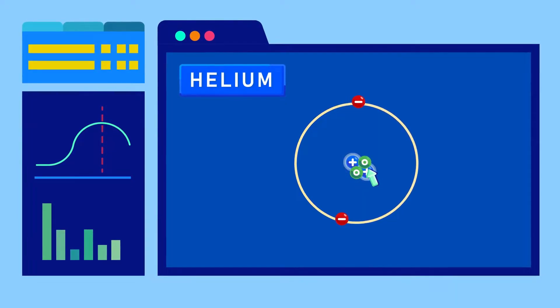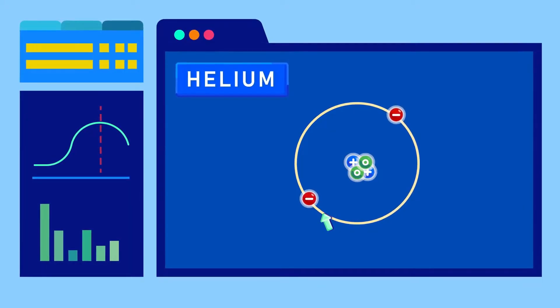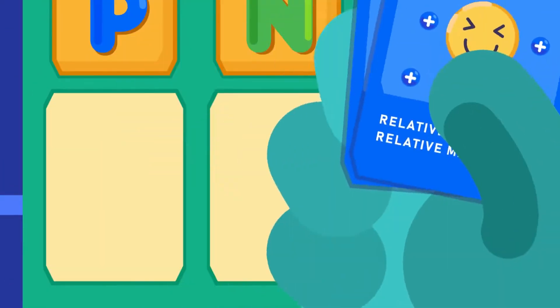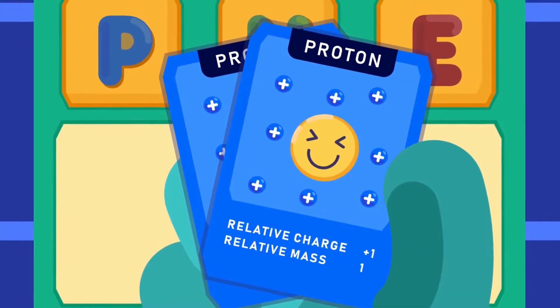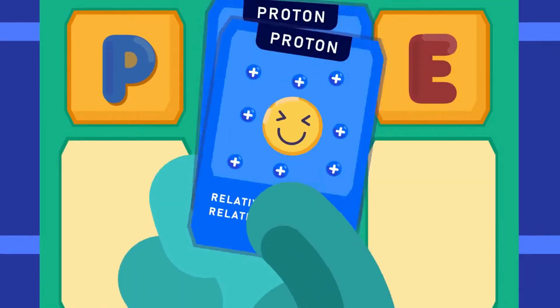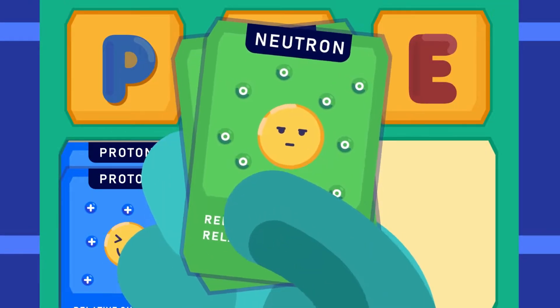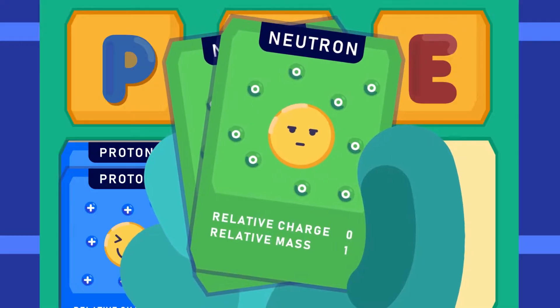We can collectively call protons, neutrons, and electrons subatomic particles. A proton has a relative charge of plus 1 and a relative mass of 1, while a neutron has a relative charge of 0 and a relative mass of 1.